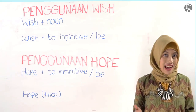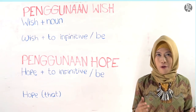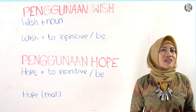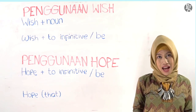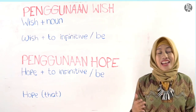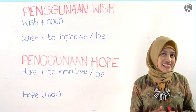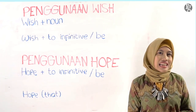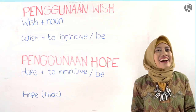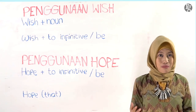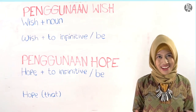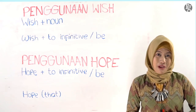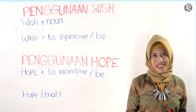Keinginan atau harapan yang dinyatakan bisa saja berdasarkan pada kondisi yang sesuai yang terjadi pada saat ini atau berdasarkan realita, atau bisa juga yang hanya berdasarkan hayalan belaka. Contohnya, kalian berharap ingin menjadi terkenal seperti public figure tertentu, atau kalian ingin pergi keliling dunia, atau bisa juga kalian berharap punya rumah sebesar atau semewah istana kerajaan. Kira-kira gimana ya caranya membuat ungkapan-ungkapan tersebut? Yuk kita belajar sama-sama.